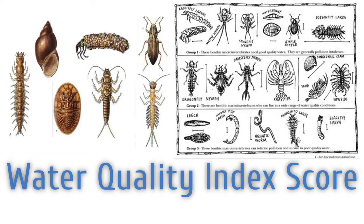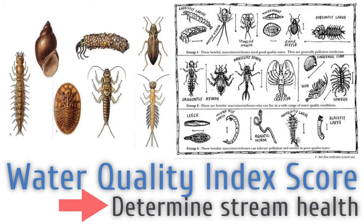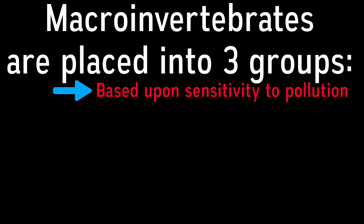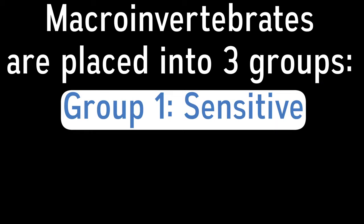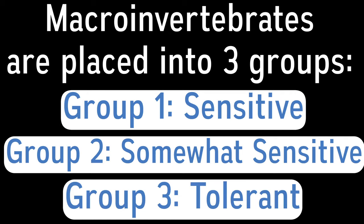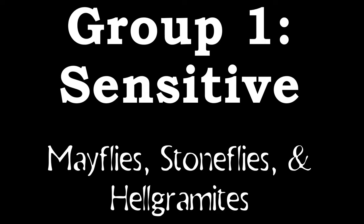Now I want to talk about how different types of macroinvertebrates can help us determine the health of a stream. Scientists use what is called the Water Quality Index score to determine stream health. They look at the different species of macroinvertebrates caught in a sample and place them into different groups based upon their sensitivity to pollution. There are three groups: group one is the sensitive group, group two is the somewhat sensitive group, and group three is the tolerant group. Let's start with the macroinvertebrates that are the most sensitive — group one.